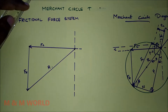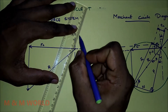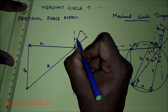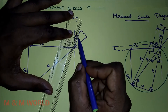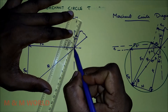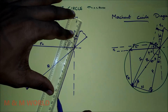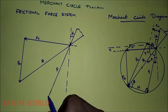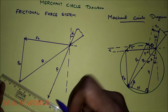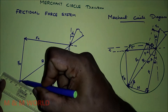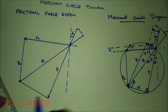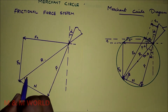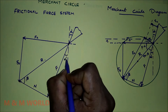Now we have to draw the tool. This is the right surface of the tool. This is the tool and this is alpha. We have to extend the line from the face of the tool. That will be the frictional force F, then normal to the frictional force N. This angle is the friction angle beta, and this angle is alpha.